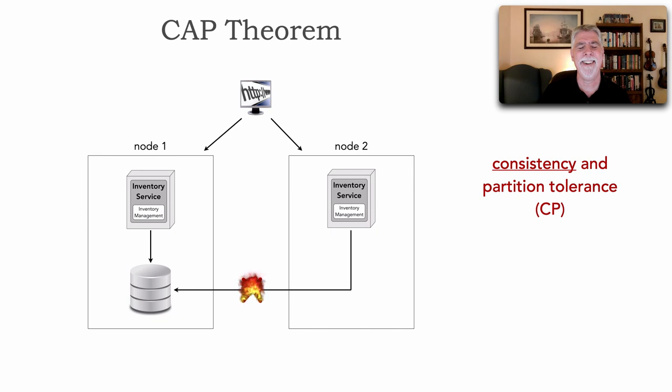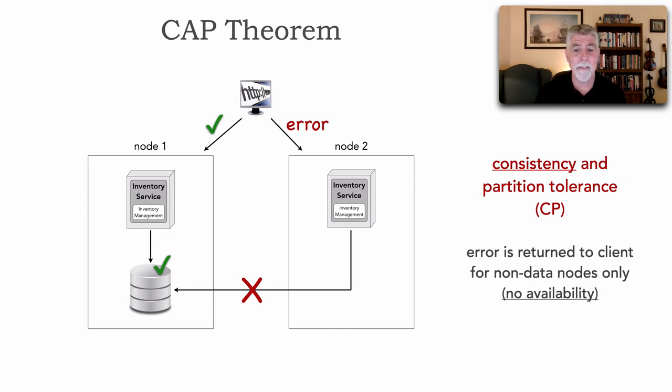If we have a network, not if, when we have a network failure, we're still choosing consistency over availability. But there's an interesting story with this topology here. Errors will always be returned in node two or any node that doesn't contain the data. But interestingly enough, if the client is directed to node one, it will work. So here with this kind of topology, it keeps things consistent. That's why we're choosing consistency. But errors are only returned for non-data nodes.